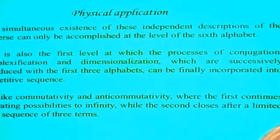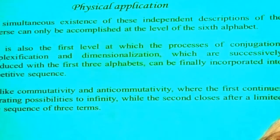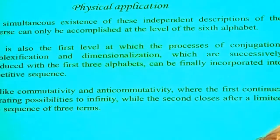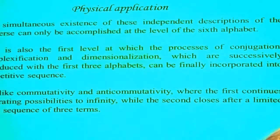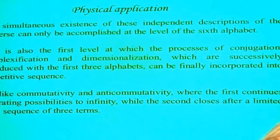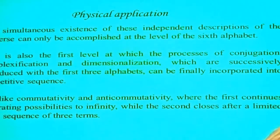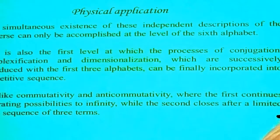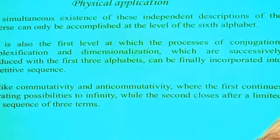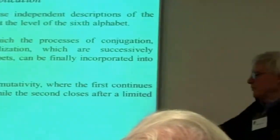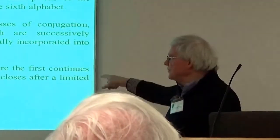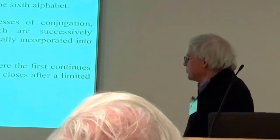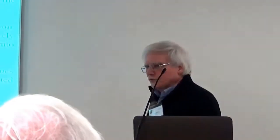This is the first level at which the process of conjugation, complexification, and dimensionalization are successfully introduced and can be incorporated into a repetitive sequence. We've already seen how you can have commutative and anti-commutative. If you take A, B as anti-commutative, then they're anti-commutative with A times B and nothing else — so it's like a boxing off of that little cycle. Commutativity continues to infinity, but you can only have three that are anti-commutative in the way described.